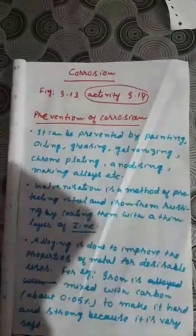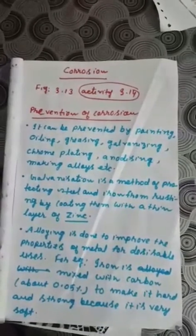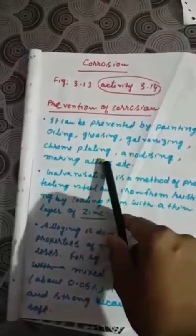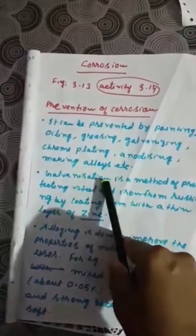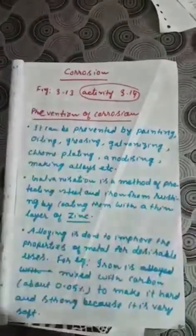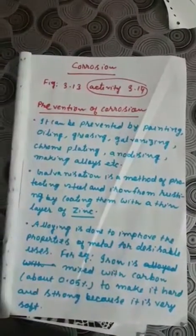Next is corrosion. Corrosion is the gradual eating up of a metal by moisture and air. Corrosion can be prevented by painting, oiling, greasing, galvanizing, chrome plating, anodizing, or by making alloys. Galvanization is a method of protecting steel and iron from rusting by coating them with a thin layer of zinc.